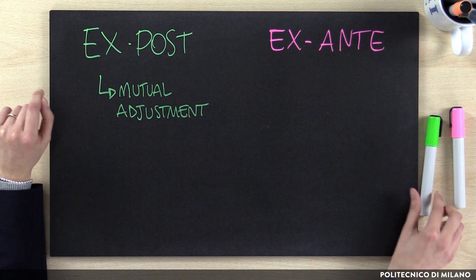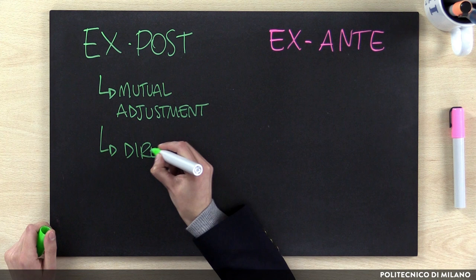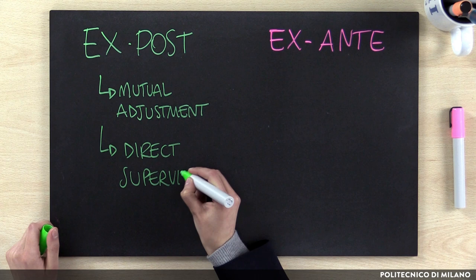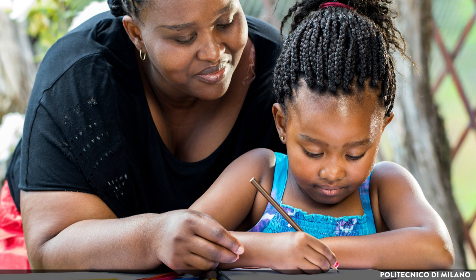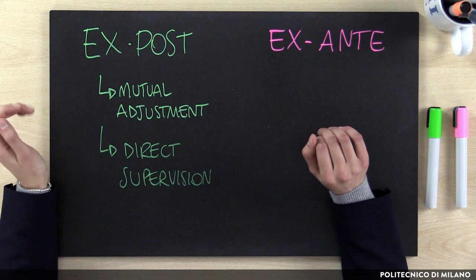The second ex post mechanism is direct supervision. This is a formal mechanism where a formal head is identified and is responsible for control and coordination of different people placed under their supervision. This mechanism follows the hierarchical and official chain of the organization. When a supervisor has many people under their supervision, this coordination mechanism is integrated by mutual adjustment.